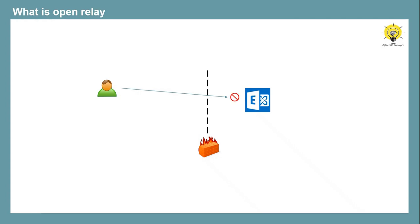But just assume what if someone from the internet — a random user — connects to your Exchange Server and sends an email to a user who doesn't belong to your organization. Do you think this is possible? Yes, this is possible. If your Exchange Server is configured for Open Relay, anyone from the internet can connect to your Exchange Server and send email to anyone using the MX record of your Exchange Server.